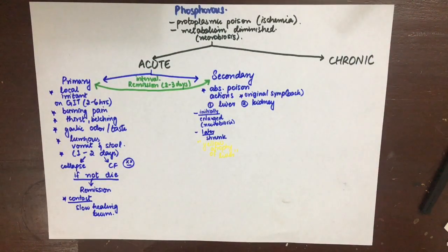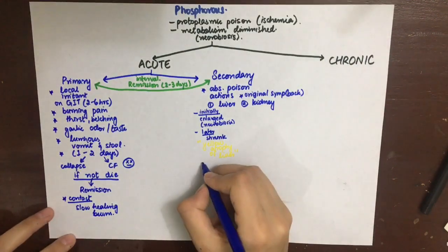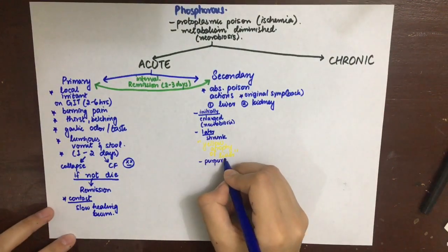Due to liver damage and hypoprothrombinemia, there is purpura and epistaxis seen.